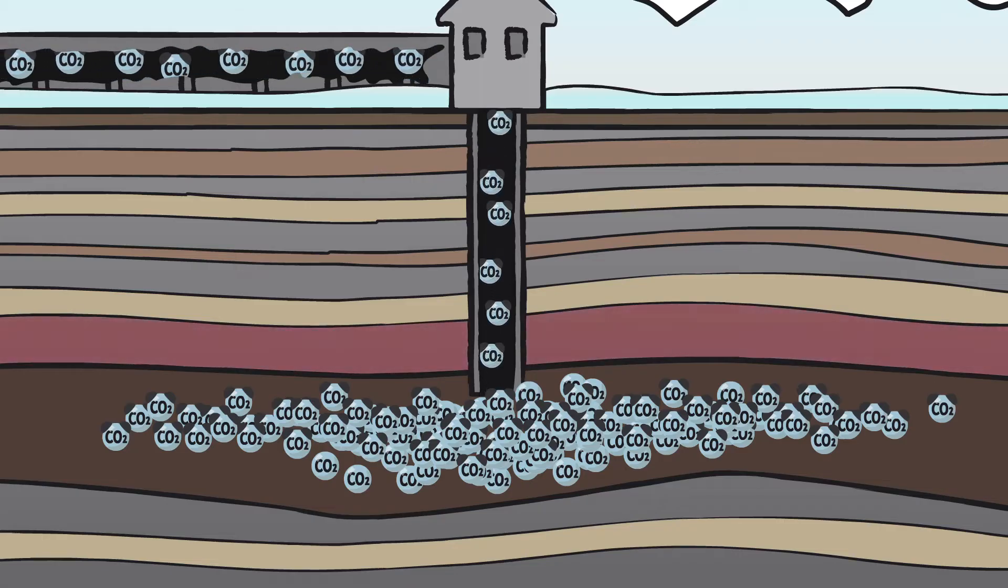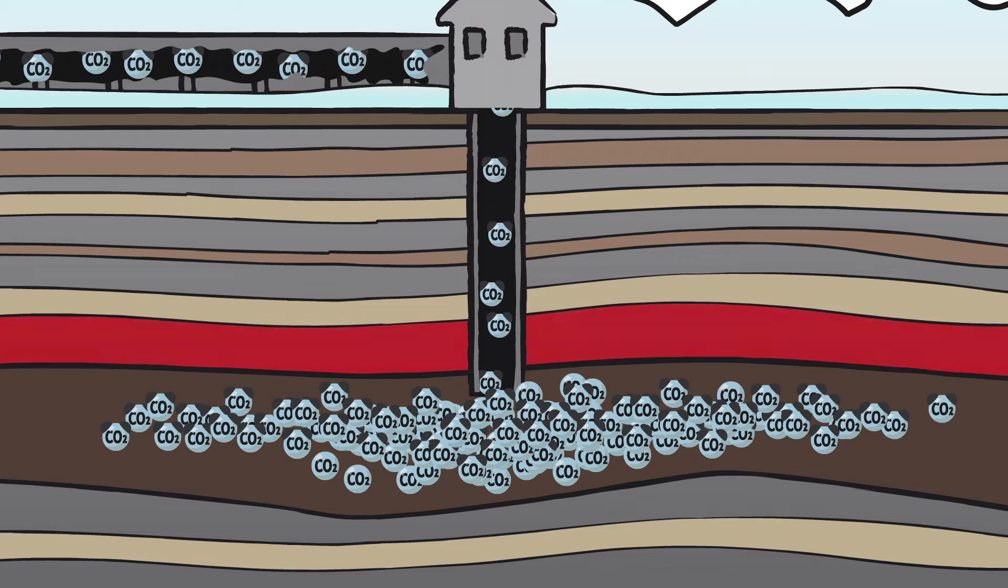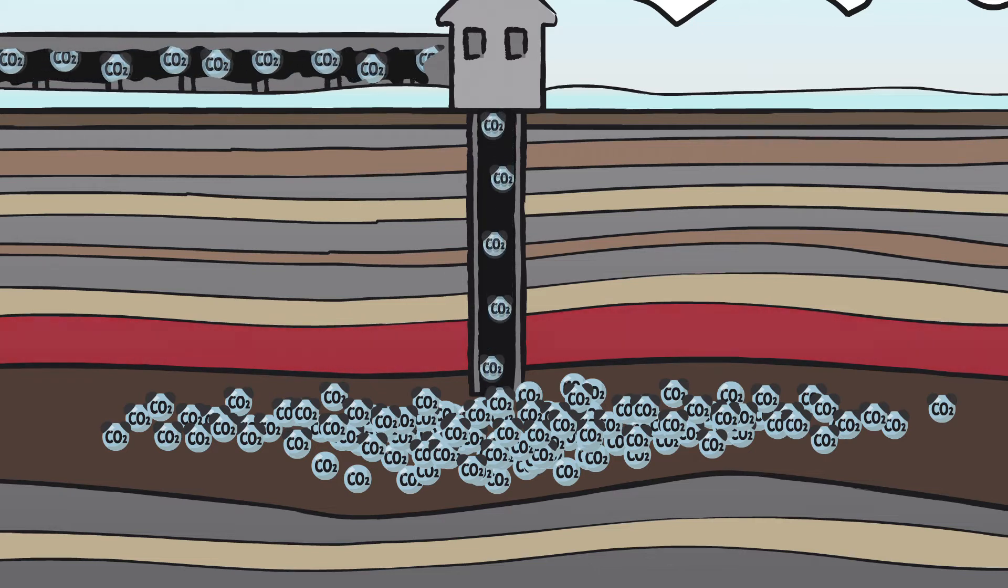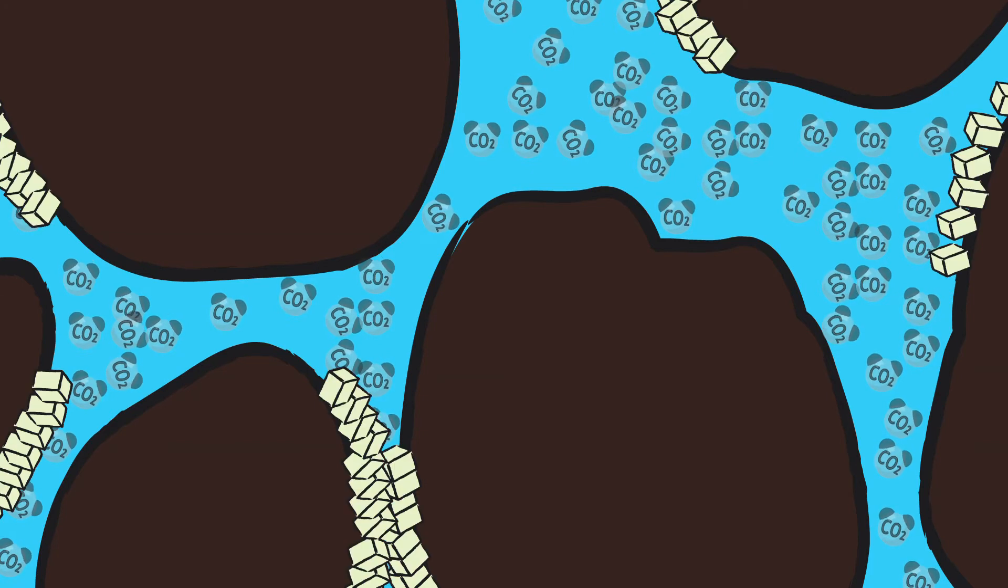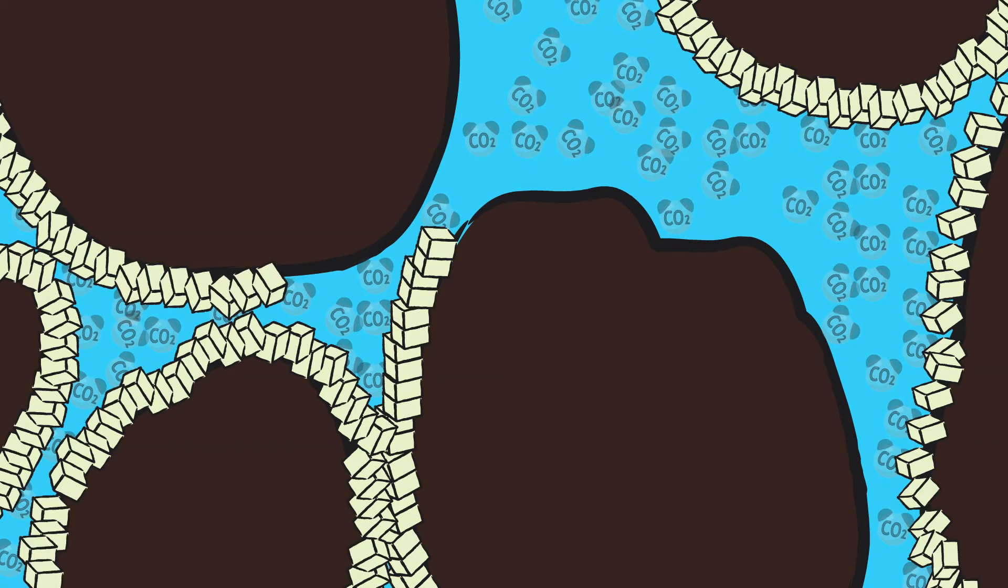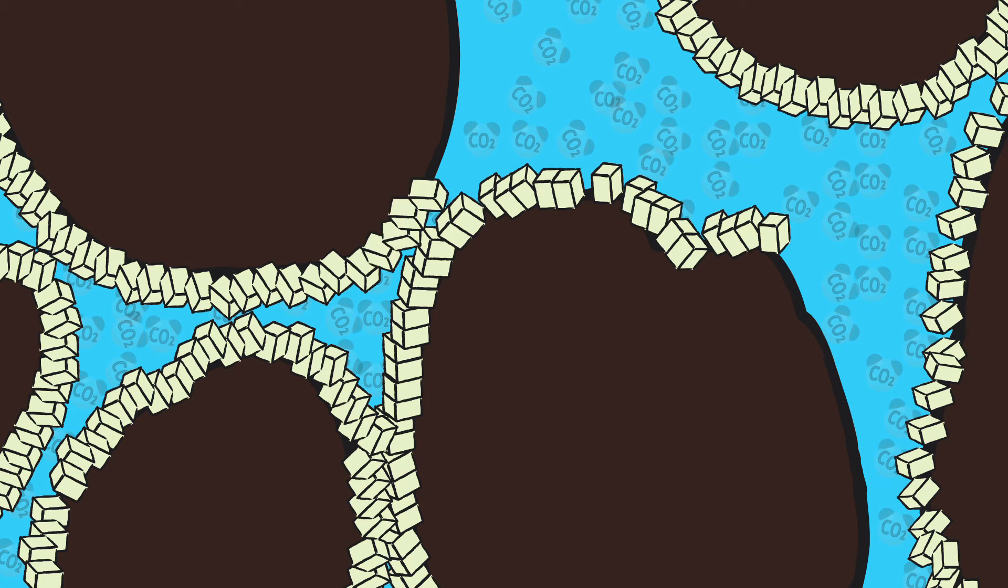The thick cap rock above prevents their escape towards the surface like the plug of a soda bottle. Gradually dissolving themselves into the saline water that impregnates the rocks, the CO2 molecules interact with the rock minerals, creating in time brand new stable minerals.